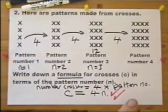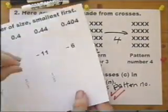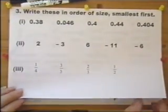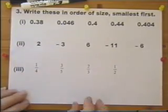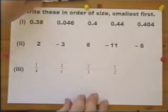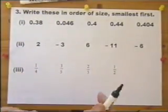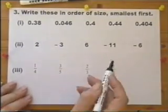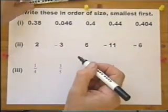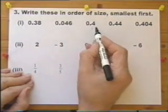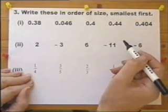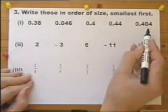Question 3. Write these in order of size, smallest first. So many times I've seen young people write them in order and then not put the smallest first, losing out. Now there are several ways of doing this sort of question, putting decimals in order. One way is to think to yourself, let's write them all as whole numbers.